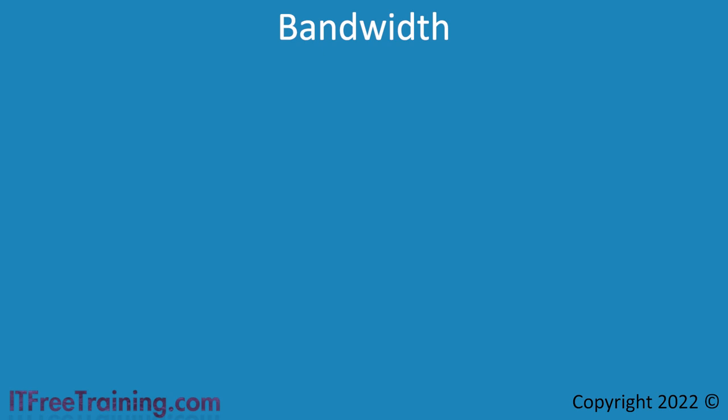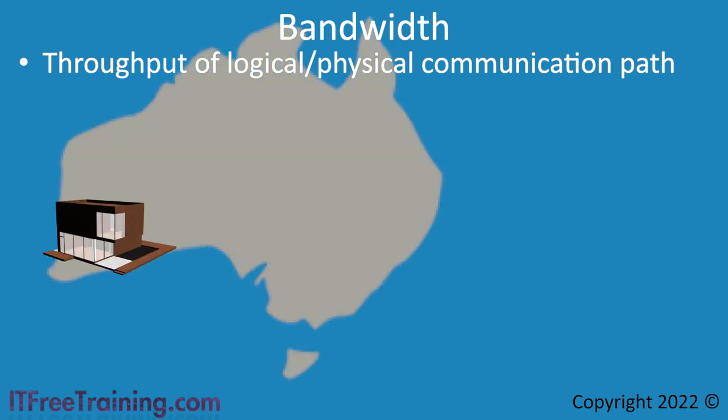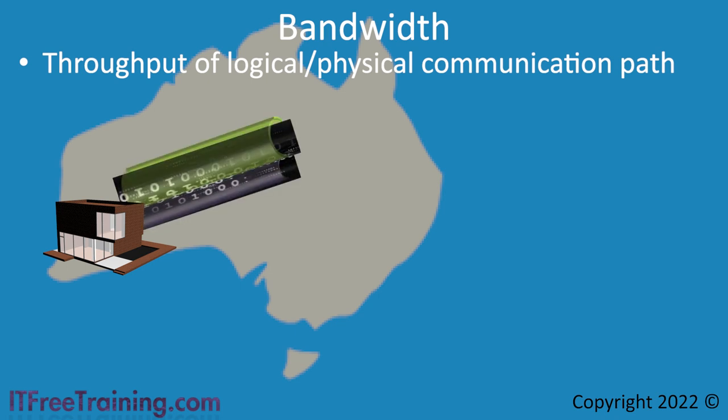The next concept to look at is bandwidth — essentially the amount of throughput you get through a logical or physical communication path. A physical adapter like a network card has bandwidth measuring how much data you can put through it. A logical adapter may consist of multiple network cards, with the bandwidth being all the network cards combined. For home internet, the connection is divided into download and upload parts, with uploads generally allocated less bandwidth since home users download far more than they upload.